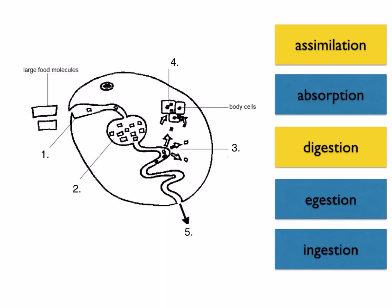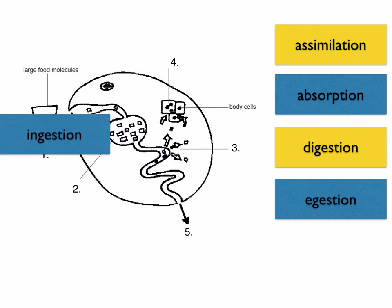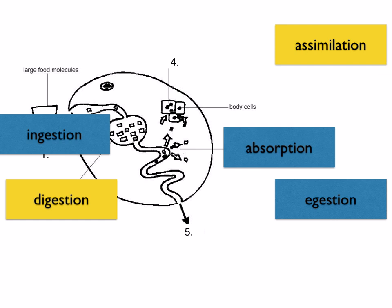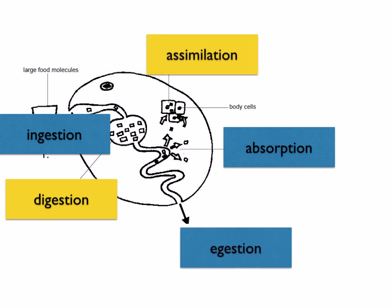Let's have a look at this picture. I want you to match the words with the numbers. Number one is ingestion. Number two is digestion. Number three is absorption. Number four, where the food molecules are going into the body cells, is assimilation. And finally, five is egestion. Keep these words in mind — ingestion, digestion, absorption, assimilation and egestion — because you need to know them and how they relate to the digestive system.